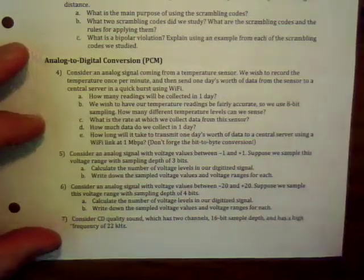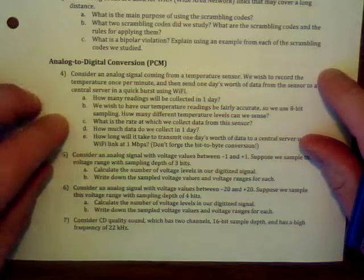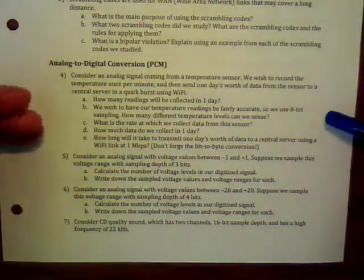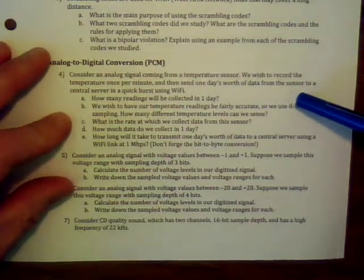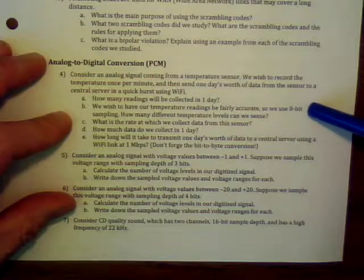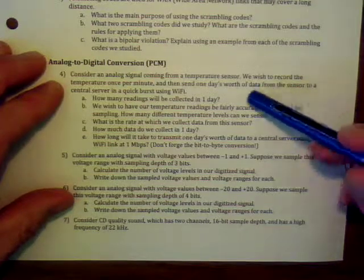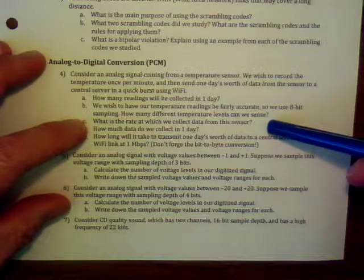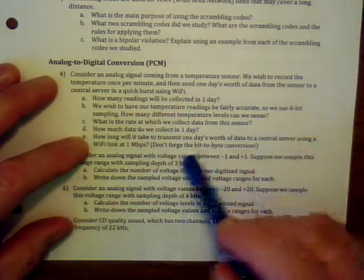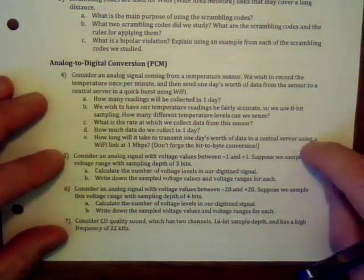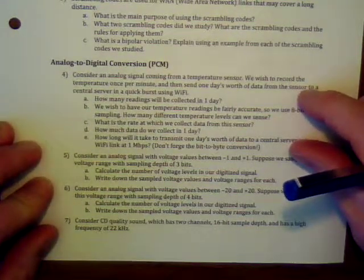For analog-to-digital conversion, I gave you a few problems because it's so widely applicable. In problem 4, I use a temperature sensor that records temperature once a minute and sends that data to a server via Wi-Fi. You need to understand what bit depth and sampling rate are, figure out how many minutes are in a day, calculate the data rate, figure out how much data is collected in a day, and then push that up to your server on a relatively fast connection.